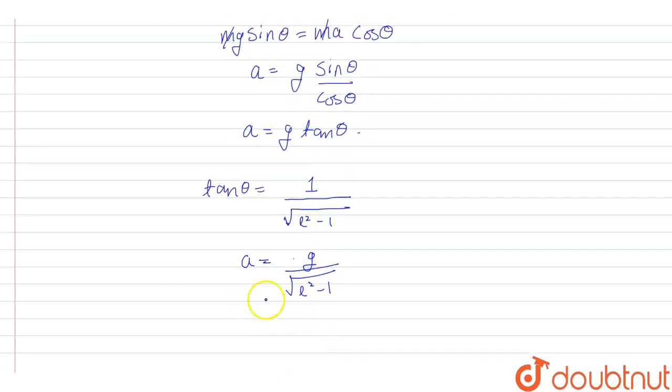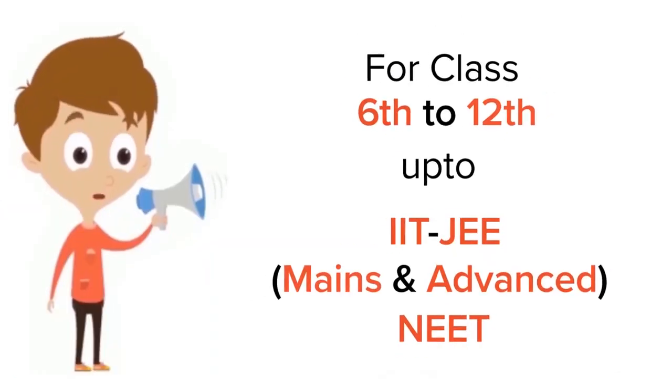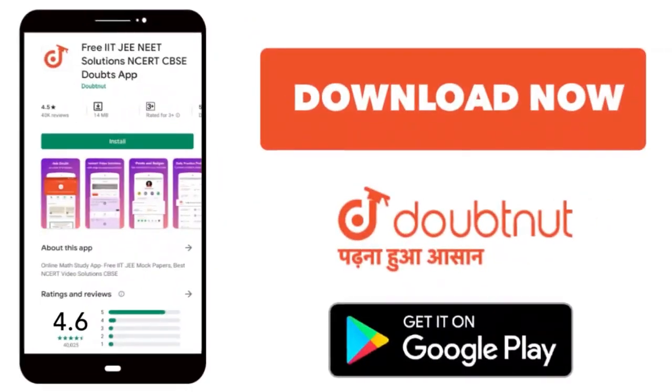So the correct option will be option c. For class 6 to 12, IIT-JEE and NEET level, trusted by more than 5 crore students, download Doubtnut app today.